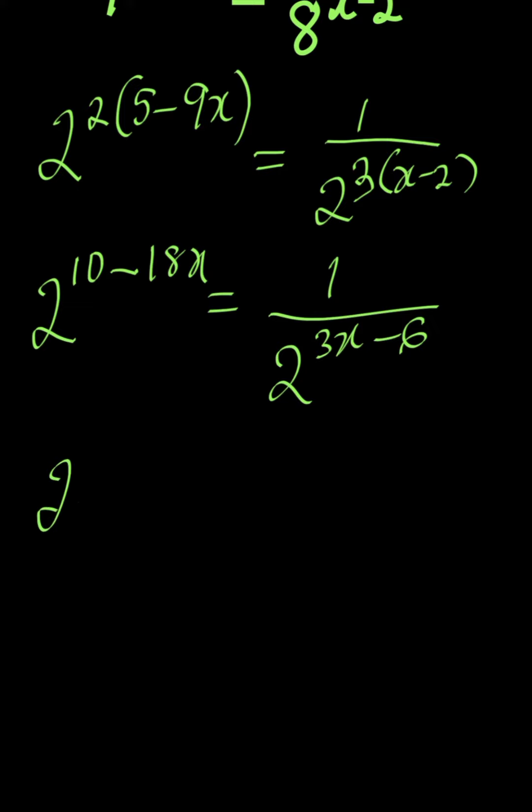So we have 2 to the power of 10 minus 18x equals 2 to the power of... because of this fraction here, 1 over the base, you can call it 2 to the power of negative 1, then you have 3x minus 6.